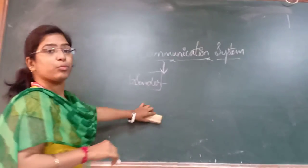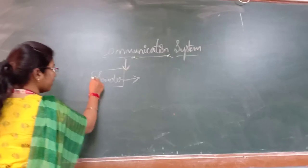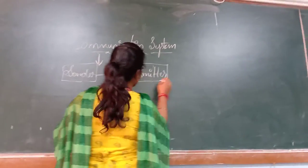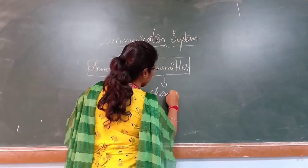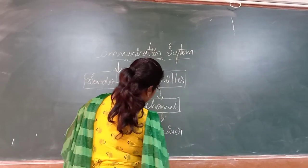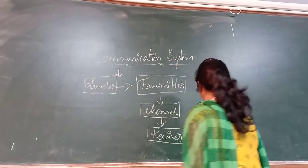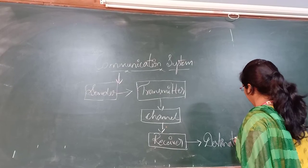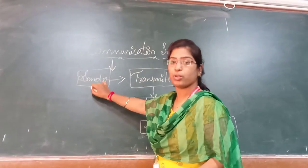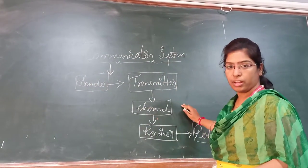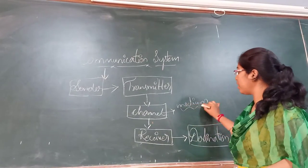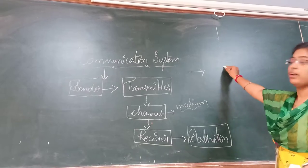So, sender and receiver. In between the sender and receiver, what is going to happen? After the sender, the sender is sending the information or the message to the transmitter. From the transmitter, it is going to the channel. This is the actual system of a communication system. From the sender, whatever data, information or message we are giving, it directly comes to the transmitter. And from transmitter to channel. Channel is nothing but a medium — a medium which acts in between the sender and the receiver section.